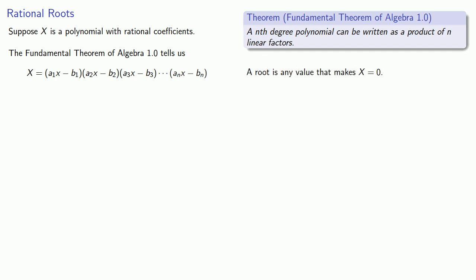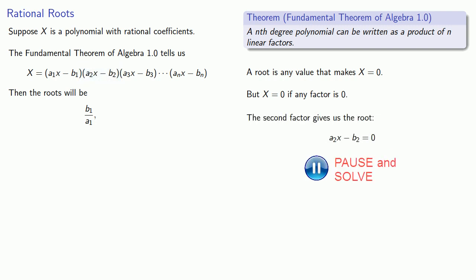Well, a root is any value that makes our expression equal to zero. But because this is a product, this expression will be zero if any of its factors are zero. So the first factor gives us the root, factor equal to zero, solving, which gives us one root. The second factor could be zero, so setting that equal to zero and solving gives us a second root.